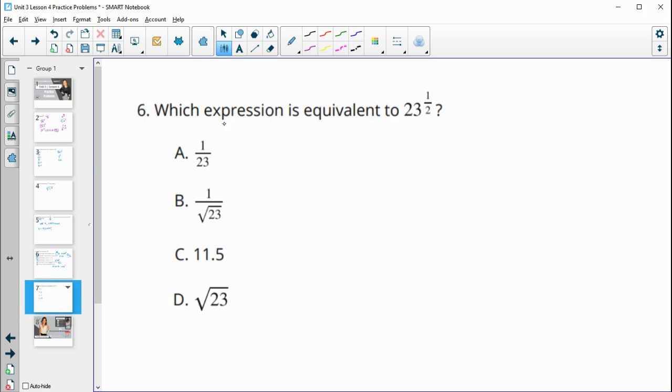Number six, which expression is equivalent to 23 to the one half power? So remember, that's like a square root, because we've got that two there and the one here. So then that's just square root of 23. So that's D.